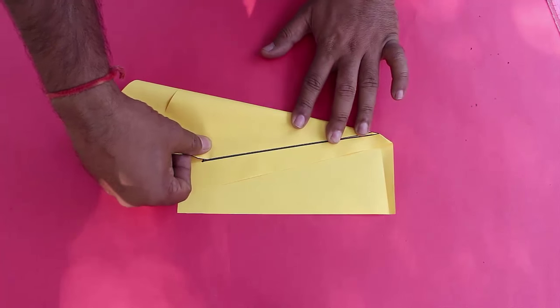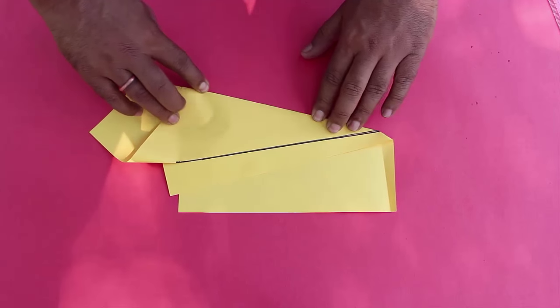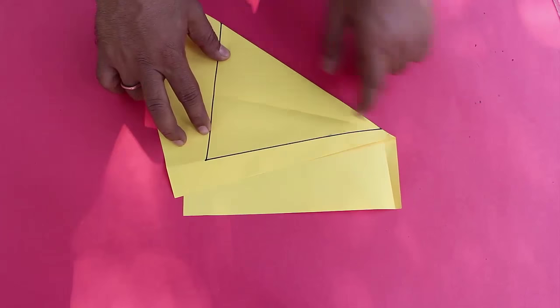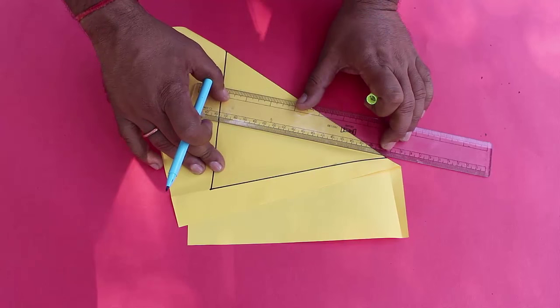This fold will bisect the angle and is called the angle bisector. Draw the first angle bisector with the help of a scale and a pen.